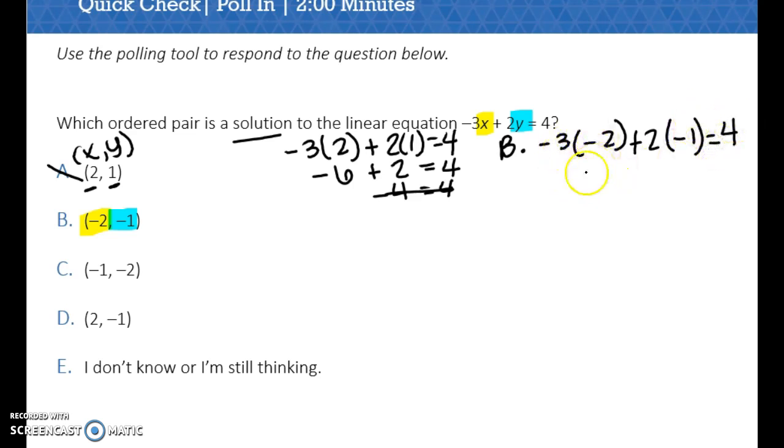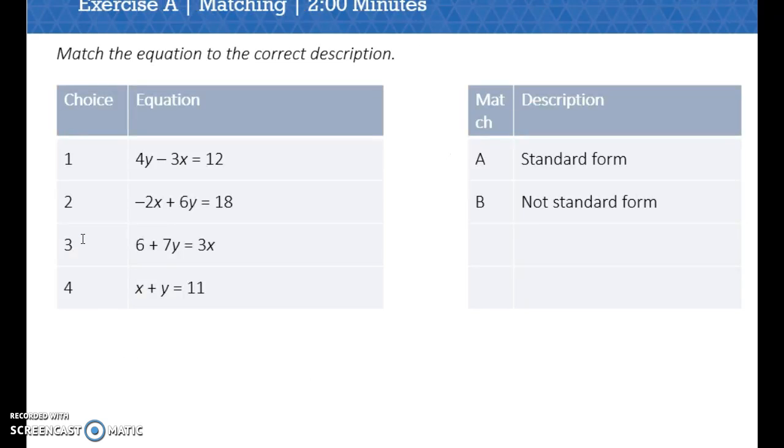So negative 3 times negative 2 is 6. Positive 2 times negative 1 would be minus 2. So 4 is actually equal to 4. So the ordered pair that is a solution is b. For something to be a solution means you plug it in and you see if both sides are equal.